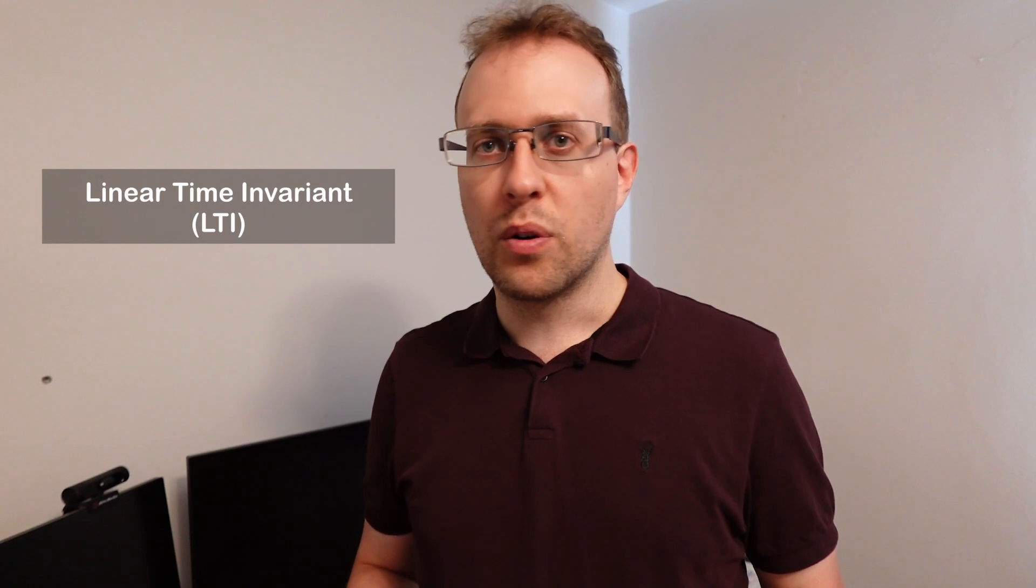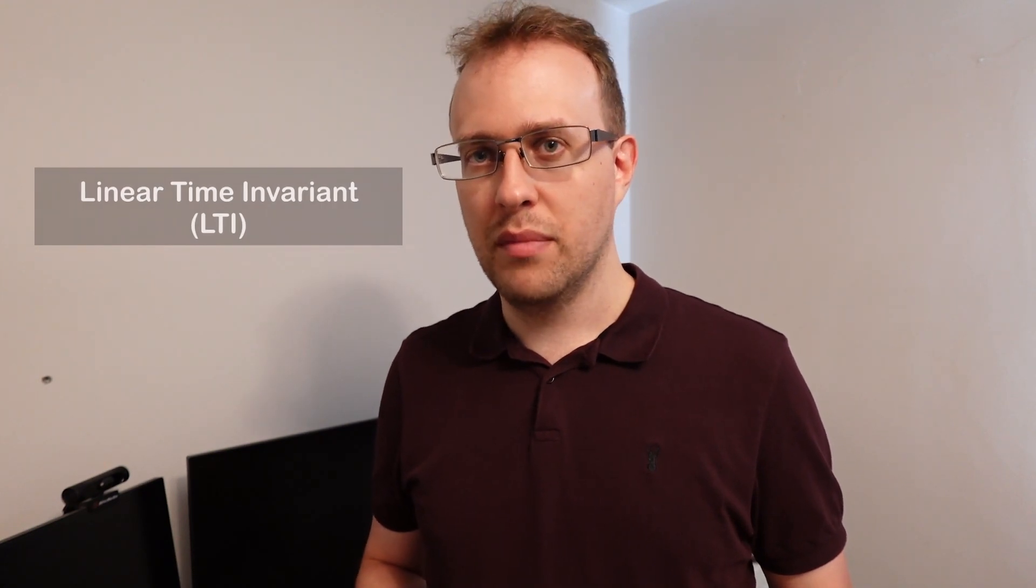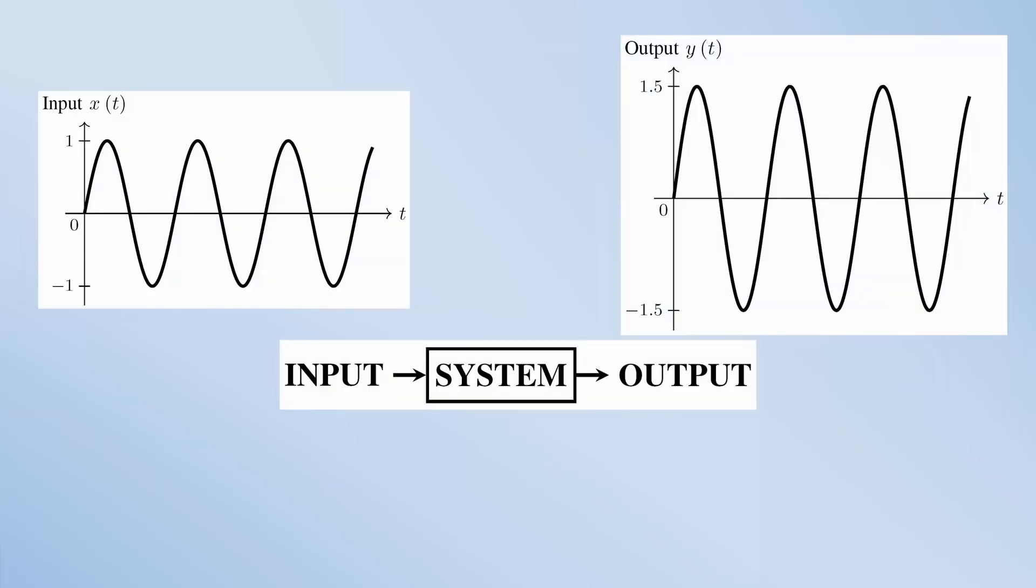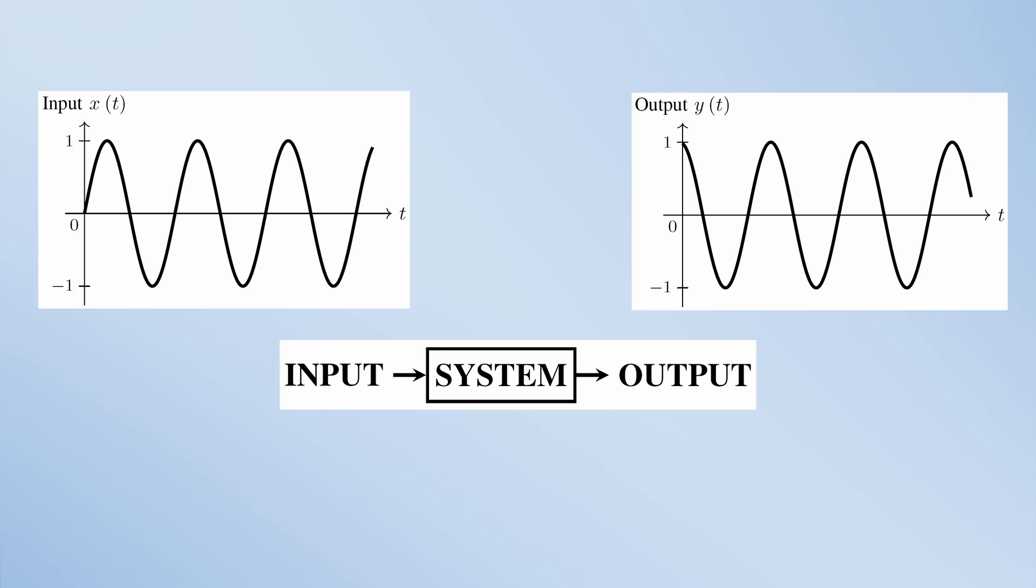If you have a linear time invariant or LTI analog system and you pass it an input of some frequency, then the output is going to have the same frequency. The magnitude can change and the phase can change, but the frequency will be the same. Let's talk about figuring out how the magnitude and phase change.